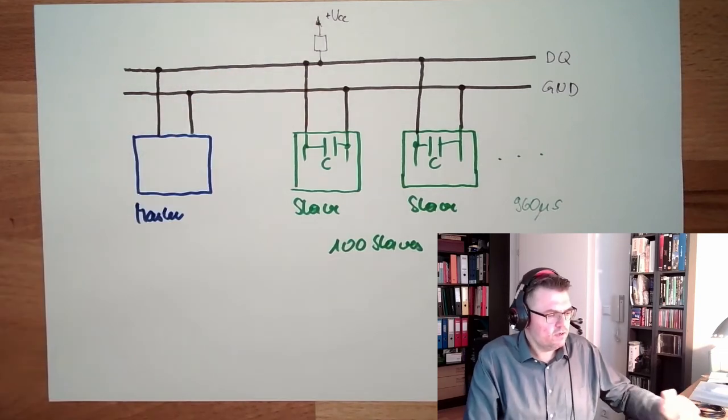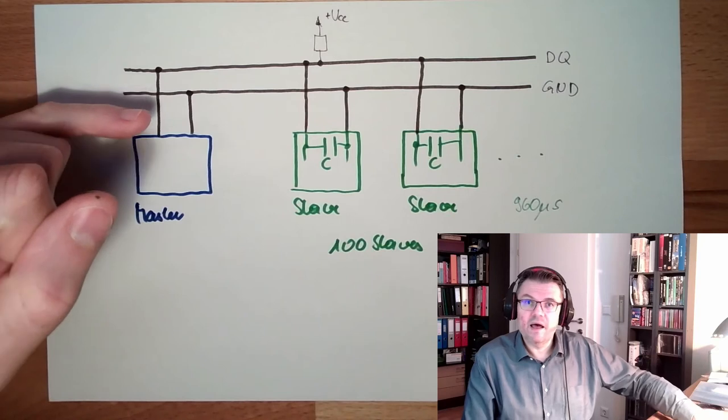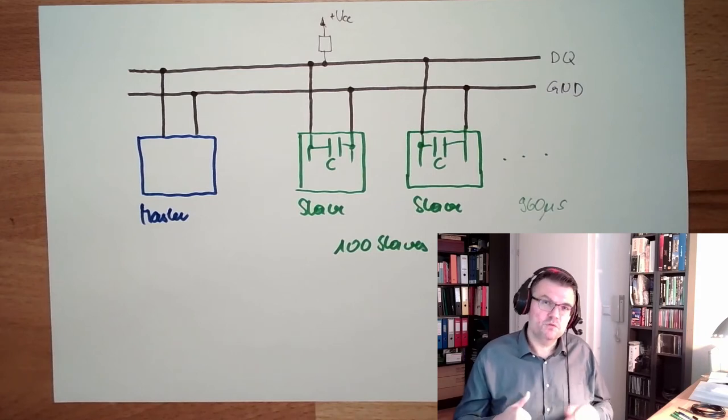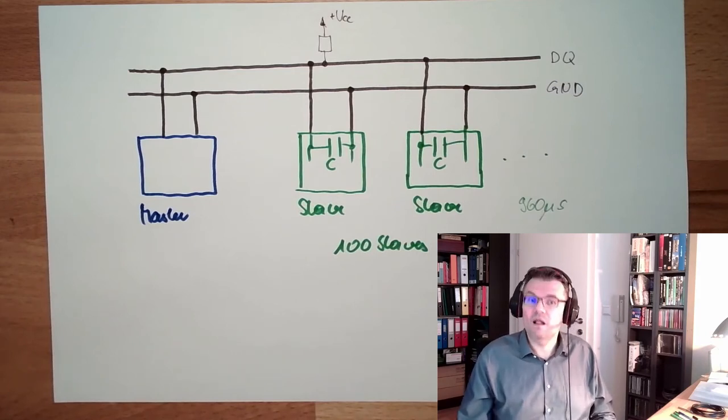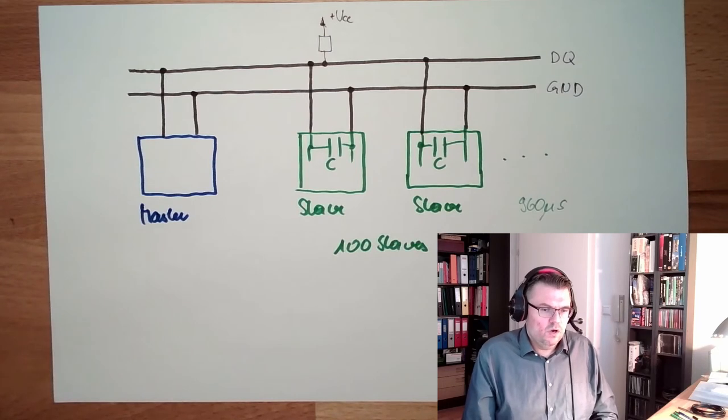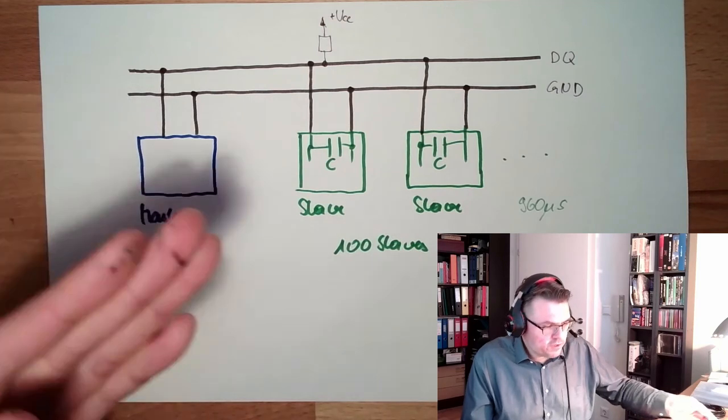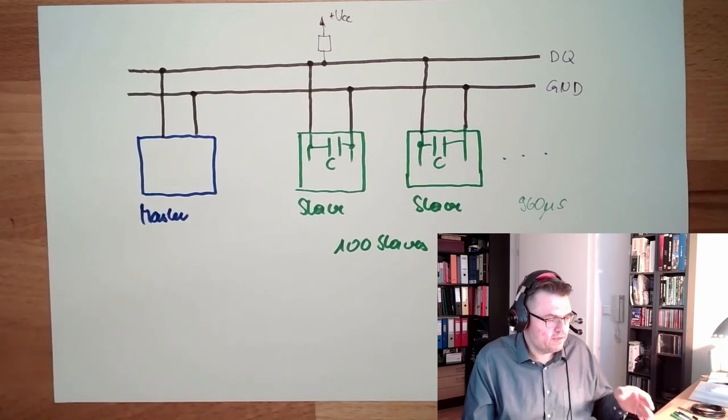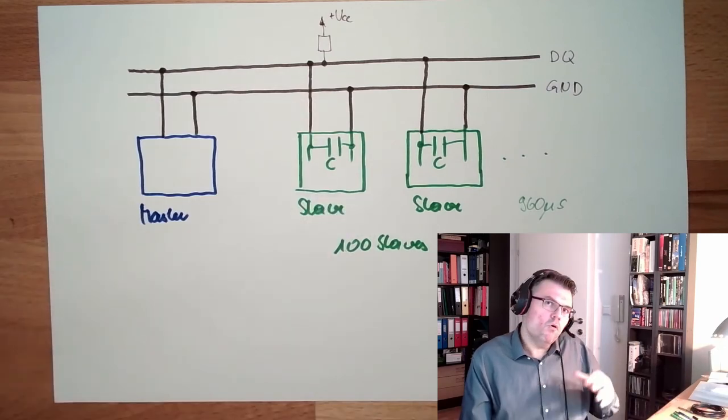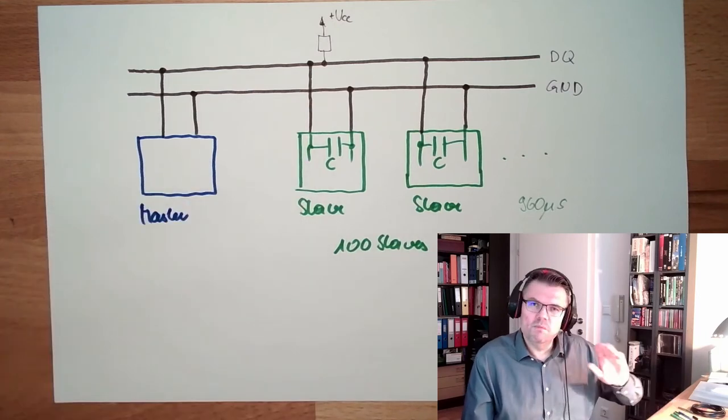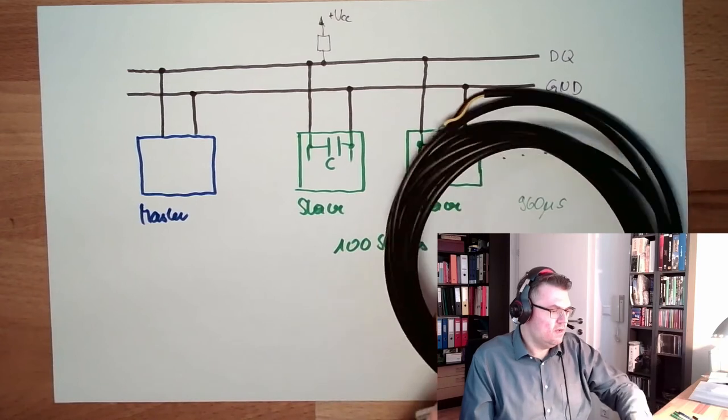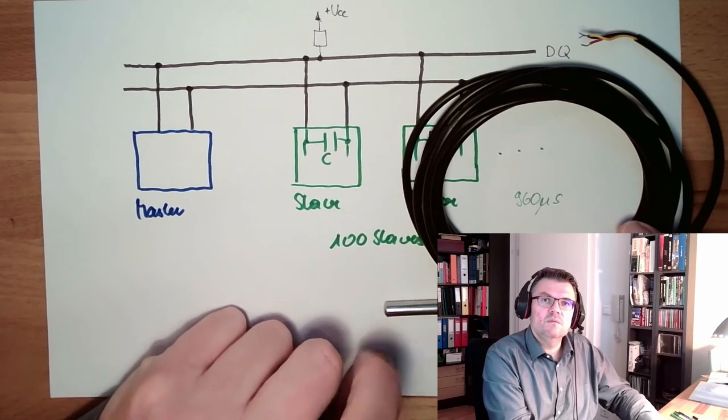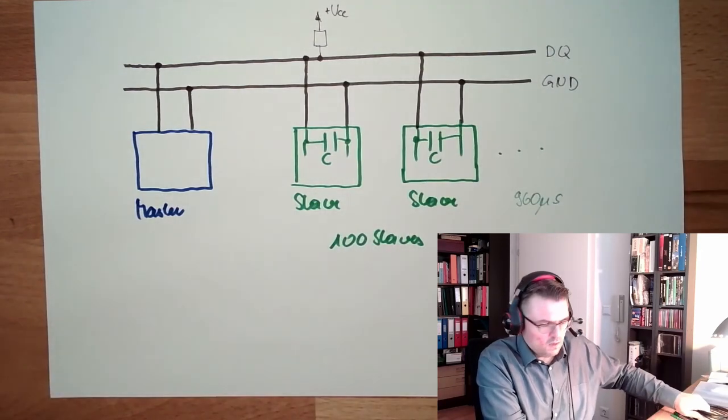So it's asynchronous. And because we only have one data line, we can only allow the master to talk or one slave to talk, but not both at the same time. So it's half-duplex, not full duplex. Asynchronous, serial, bi-directional with half-duplex, two lines, ground and DQ. DQ is also there for power supply in the slaves. If the slaves need more power, then an additional power supply line. This is what is here. There's an additional power supply line because this sensor here needs a little bit more power.